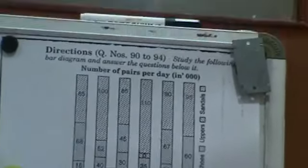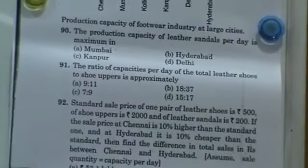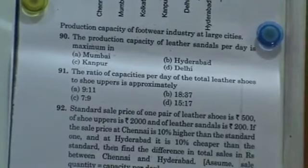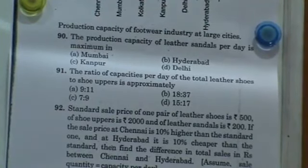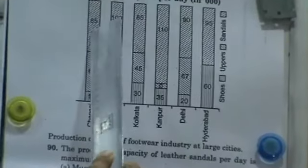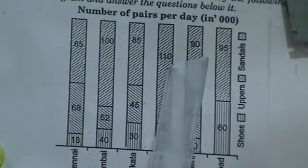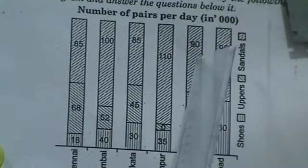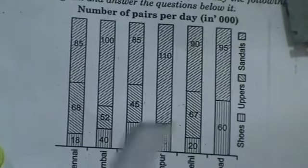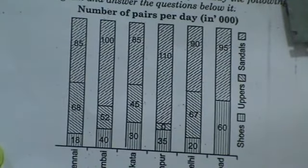The first question: the production capacity of leather sandals per day is maximum in which city? Sandals is this part. In Chennai it is 85%, in Mumbai it is 100%, in Nagpur it is 85%, in Kanpur it is 110%, in Delhi it is 90% and in Hyderabad it is 95%. Just by visually you can find out that it is maximum in Kanpur. So answer 90: Kanpur.